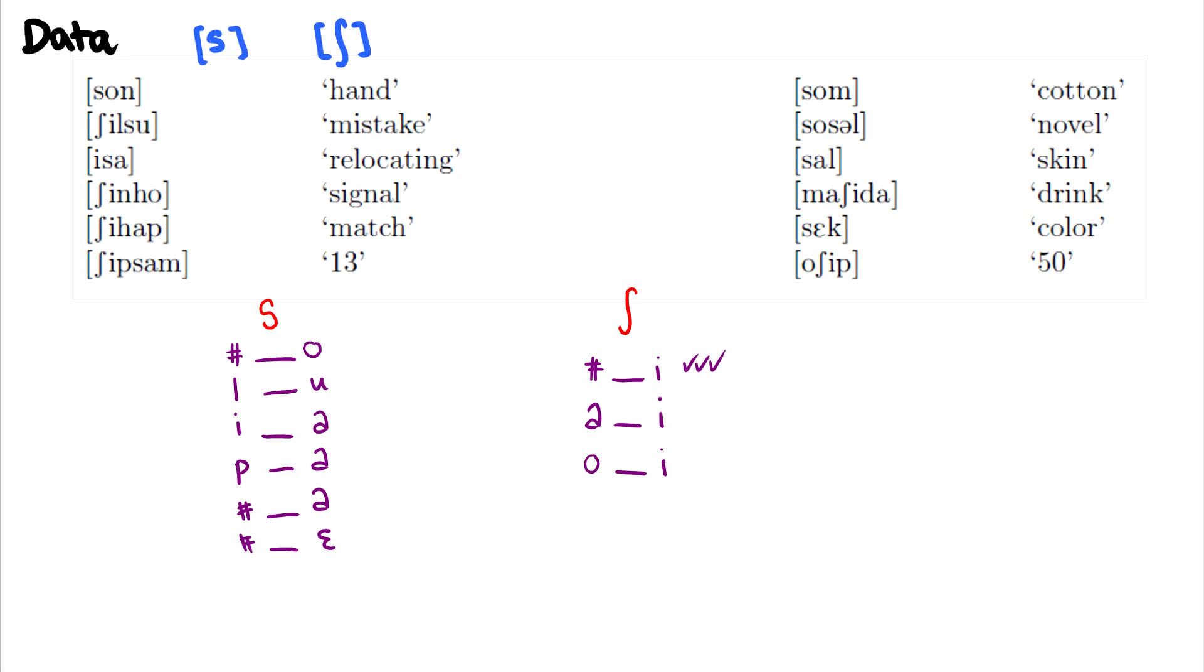So I think the very clear environment, if we take a look at sh specifically, is that it occurs before i. And if we take a look at the alveolar fricative, there is no circumstance where it occurs before the sound i. So we can say that there's no overlapping environments. Sh would be before i, and s would be everywhere else.